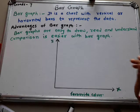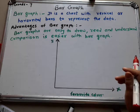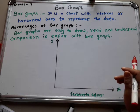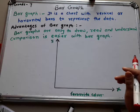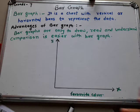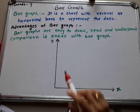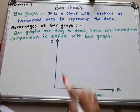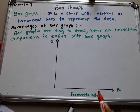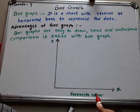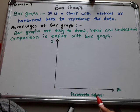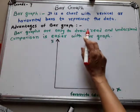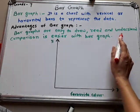What is the definition of a bar graph? A bar graph is a graphical representation of numerical data in the form of rectangular bars of equal width. It is a chart with vertical or horizontal bars to represent the data. The advantages of bar graphs are that they are easy to draw, read, and understand, and comparison is easier with bar graphs.